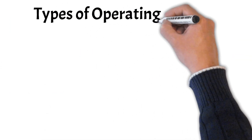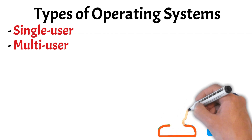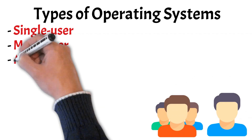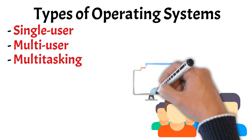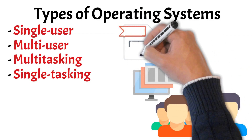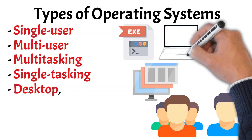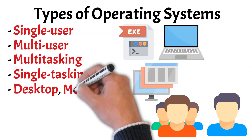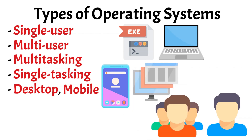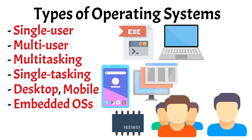Now let's look at the different types of operating systems. A single-user OS is designed for one person at a time, while a multi-user OS allows multiple users to access system resources simultaneously, common in servers and mainframes. In terms of task handling, a multi-tasking OS can run several applications concurrently, like Windows or macOS, whereas a single-tasking OS focuses on executing one program at a time, typical in simpler or older systems. Desktop operating systems are built for personal computers and laptops, offering a full graphical interface and wide hardware support. Mobile operating systems, like Android and iOS, are optimized for touchscreen devices with power and resource limitations. Embedded OS runs on specialized hardware such as smart appliances, medical devices, or routers, often with minimal interfaces.